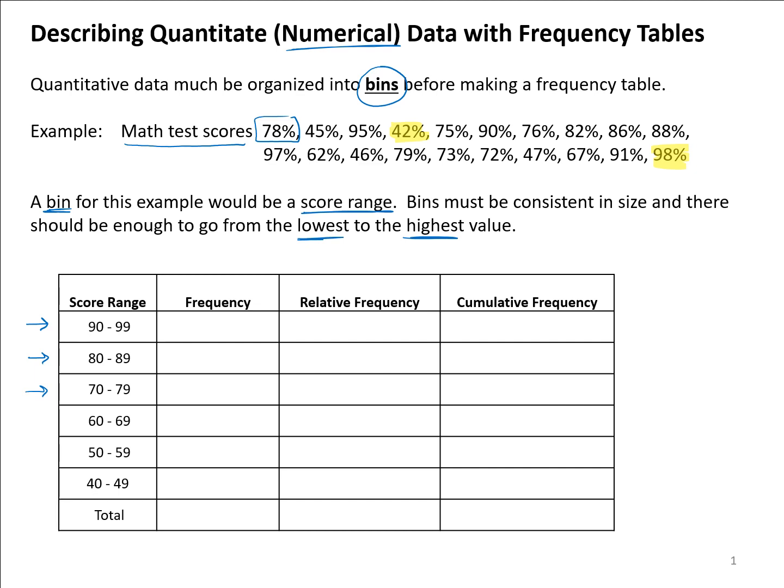The way people create bins generally depends on what their data looks like. I've created these bins based on what would typically be an A on a math test, for instance 90 to 99. B would typically be 80 to 89, C would be typically 70 to 79.